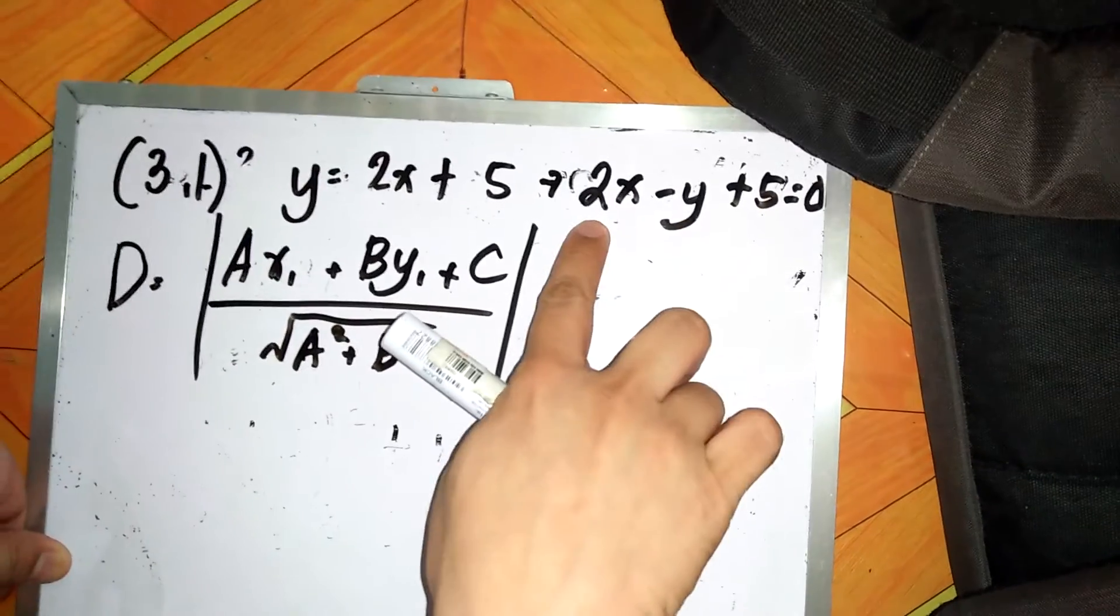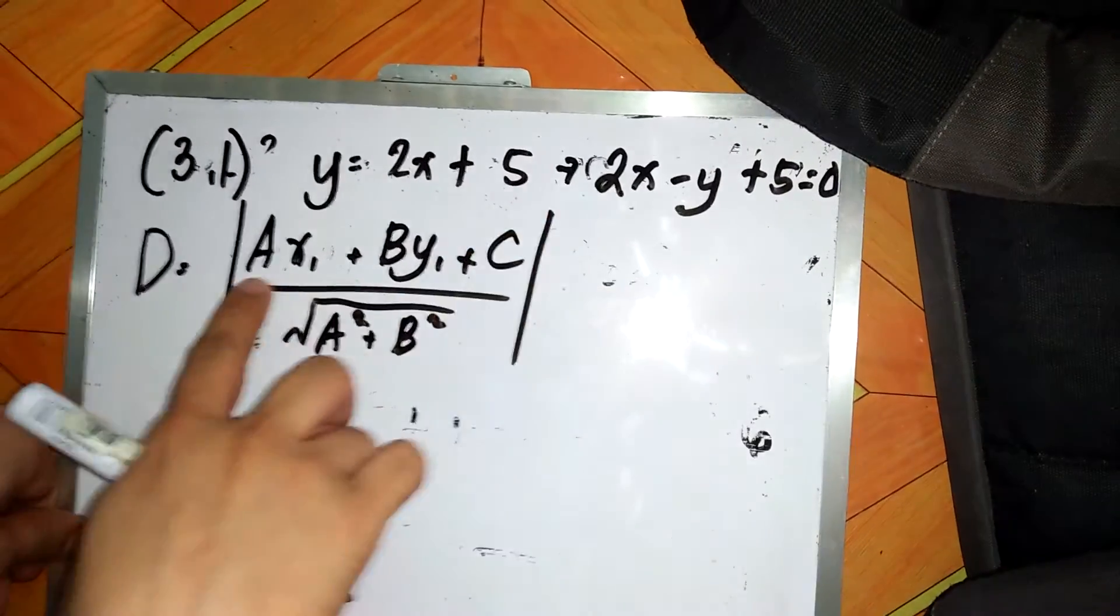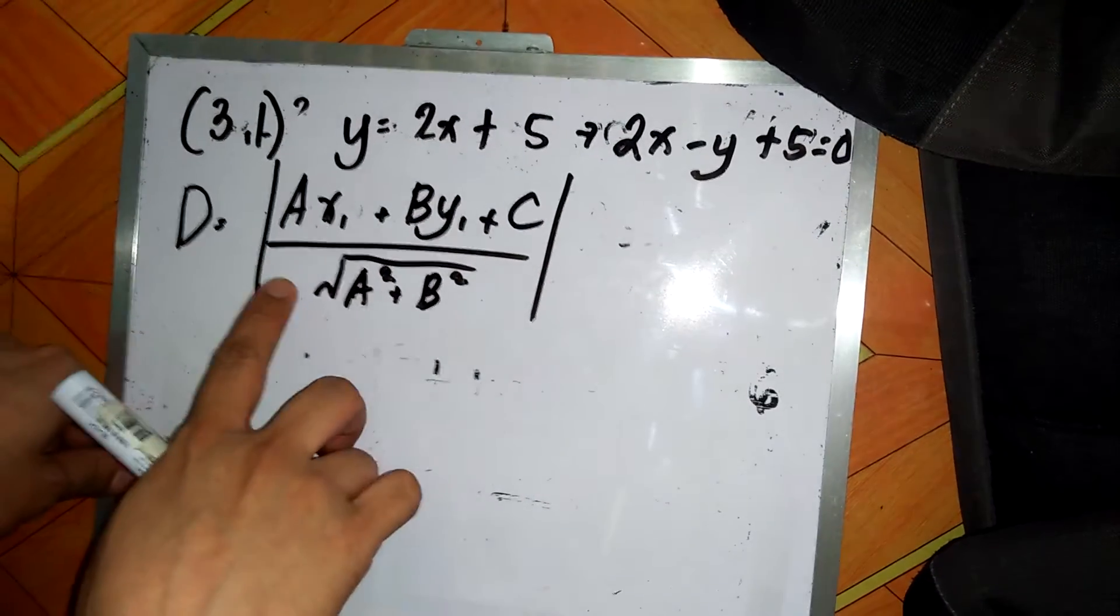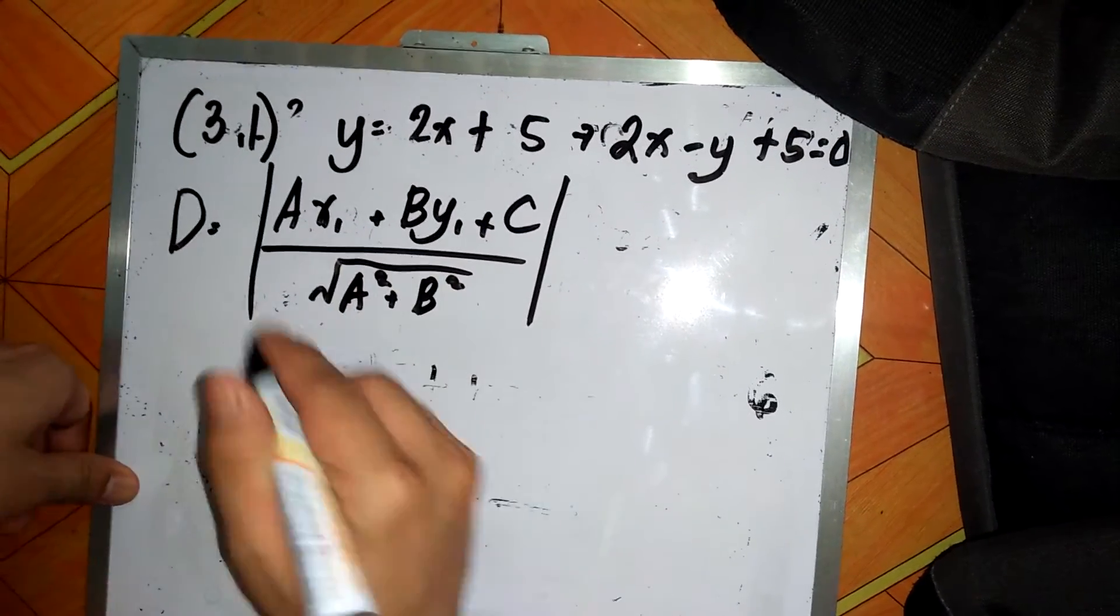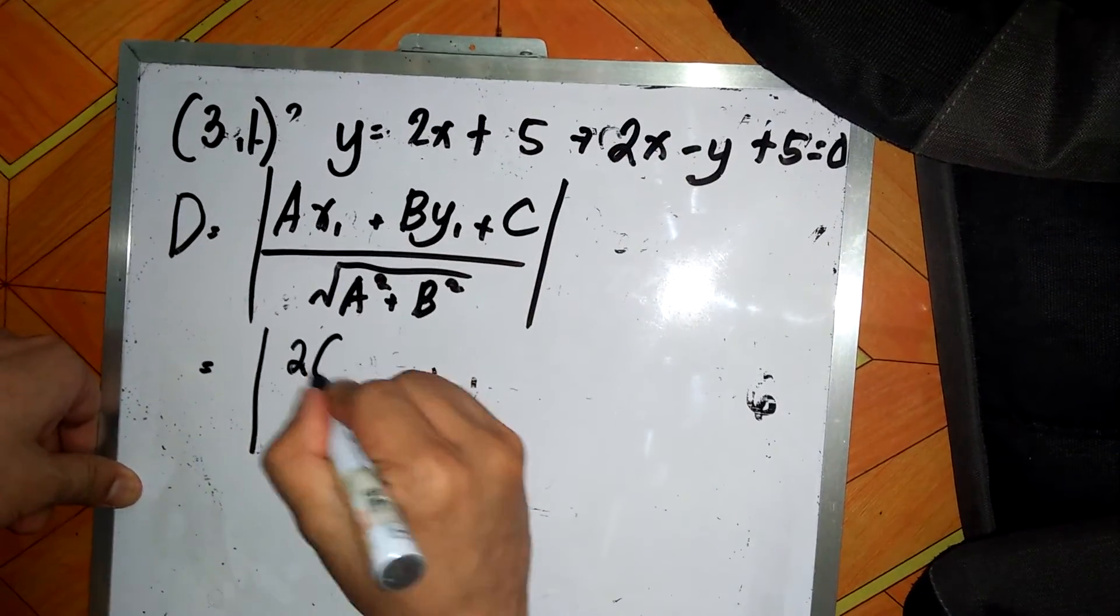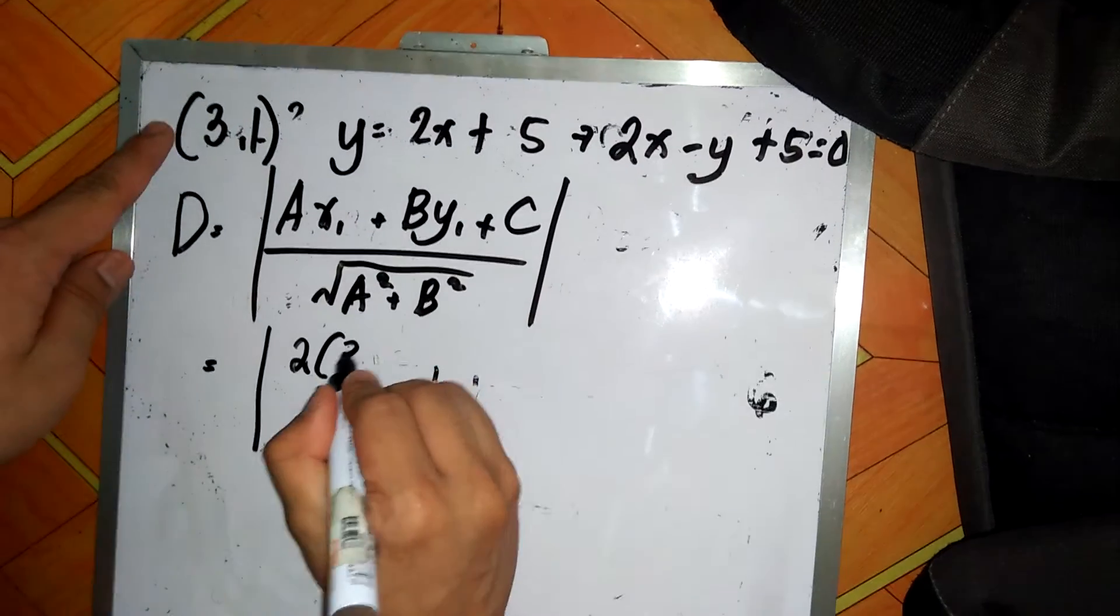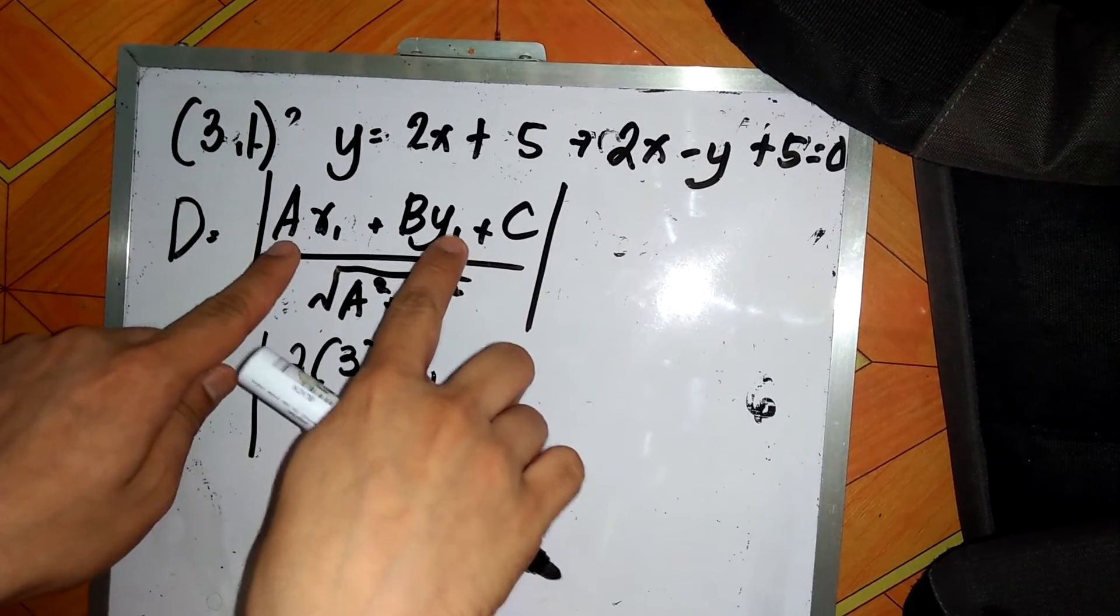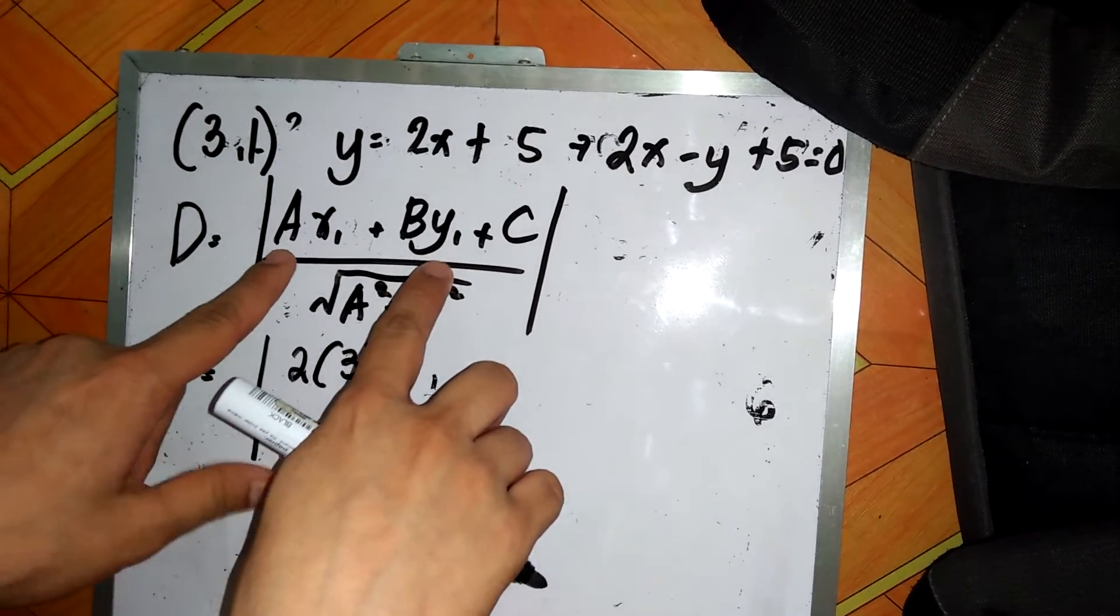So once you convert this one to the general form, you can directly substitute this to the equation to get the distance between the point and the line. So this will be a, or a is 2, x sub 1 is 3, so the x sub 1 and the y sub 1 denotes the point.